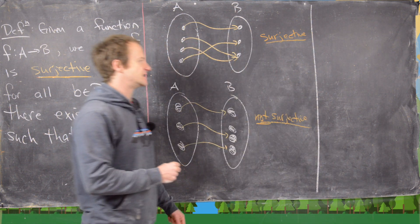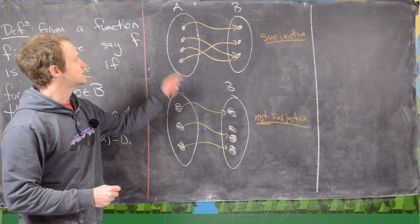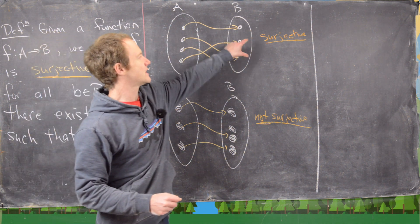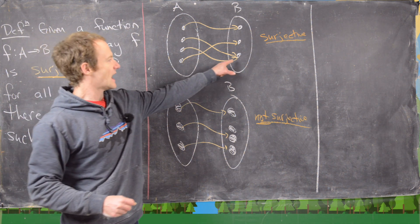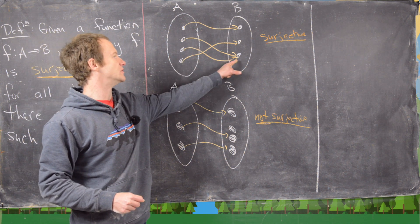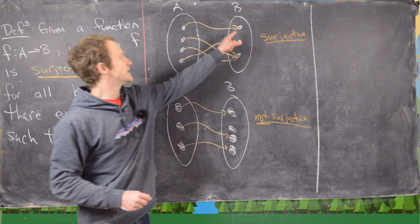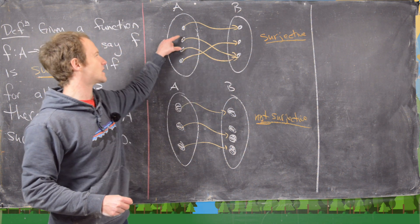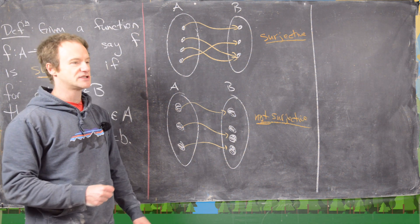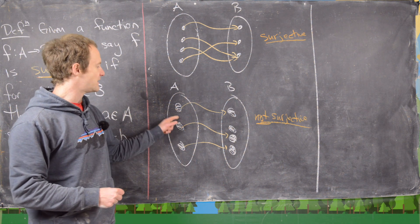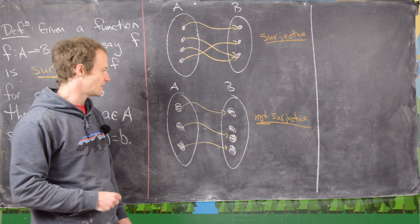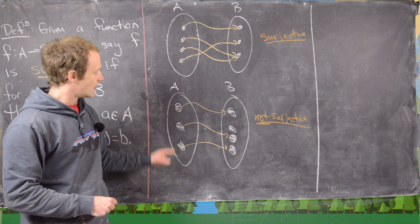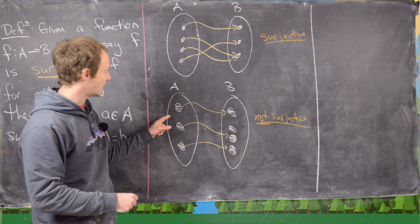Generally the first thing you look at are these picture diagrams. Here's a picture diagram for a surjective function. We have four elements in the domain and three elements in the codomain, but every element in the codomain is mapped onto by an element in the domain. This first one is mapped onto by the first domain element, the second by another, and the third is mapped onto by two domain elements — that's okay, you just have to be mapped onto by at least one. The second example is not surjective because this second element in the codomain is missed.